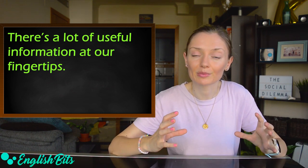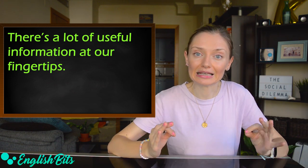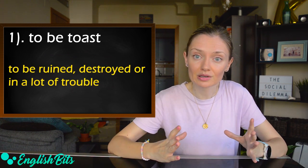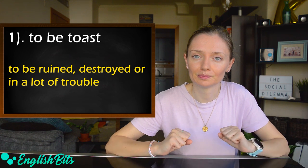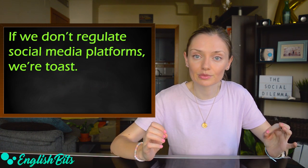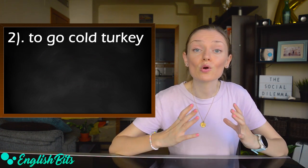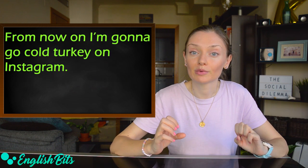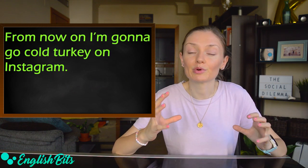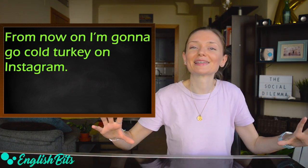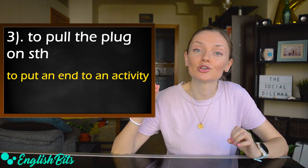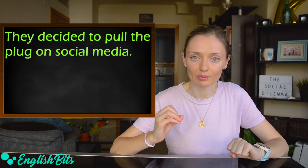And to finish the first segment of today's video, we're going to learn three idioms. The first one, used in the documentary, is to be toast. It means to be ruined, destroyed, or in a lot of trouble. For example, if we don't regulate social media platforms, we're toast. The second idiom: to go cold turkey. It means to give up a bad habit abruptly and completely. For example, from now on, I'm gonna go cold turkey on Instagram. And last but not least, the idiom to pull the plug on something. It means to put an end to an activity. For example, they decided to pull the plug on social media.